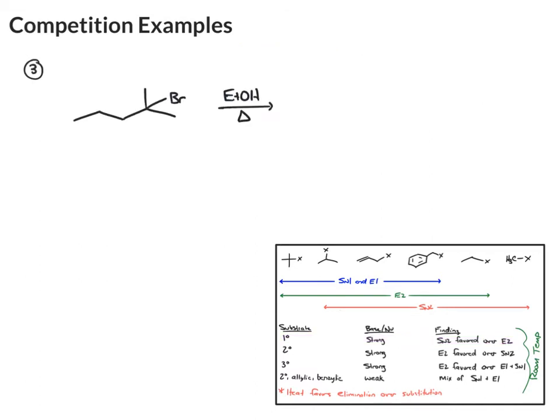In this example, we have a tertiary bromide. Tertiaries can undergo SN1 and E1 mechanisms, and then also E2 likes tertiary halides. So we have three mechanism choices from the organohalide. Then if we look at our reagent, we have ethanol, and ethanol is a weak nucleophile and base. That means it can undergo SN1 and E1 reactions. It's not strong enough to do the bimolecular substitution or elimination.